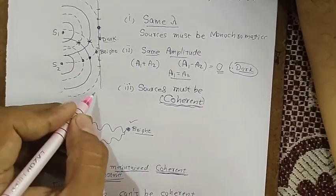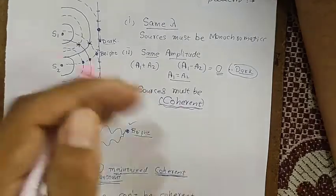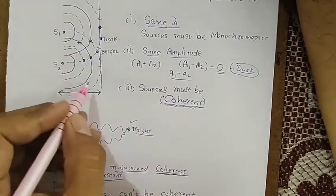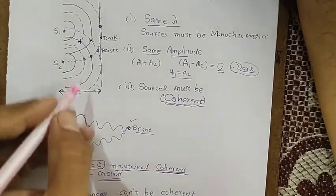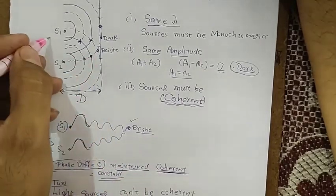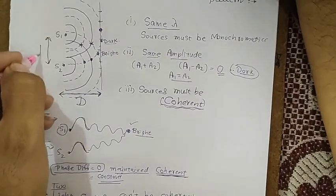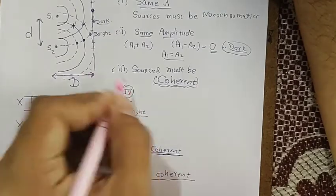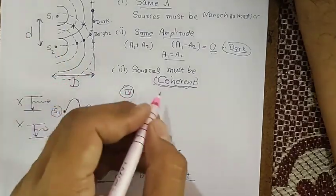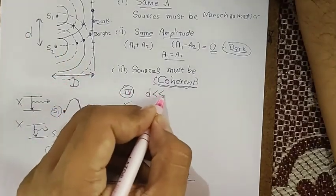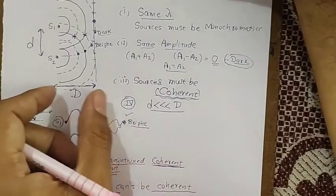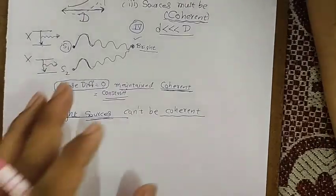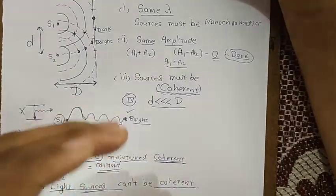Apart from the conditions already explained, a few more conditions are there. In short, if the distance between sources and screen is capital D, and the distance between the two sources is small d, then one more condition for a steady interference pattern is that small d must be very much less than capital D.